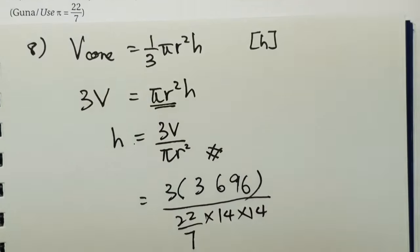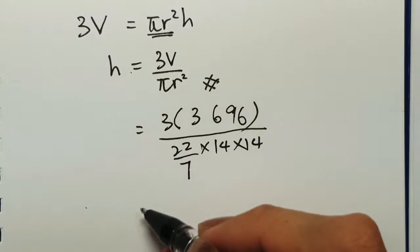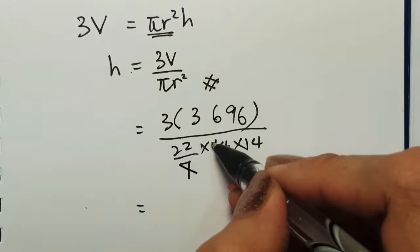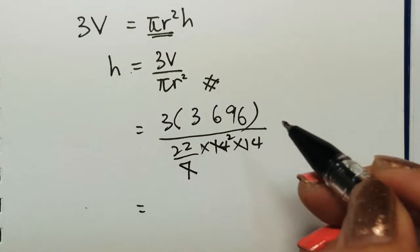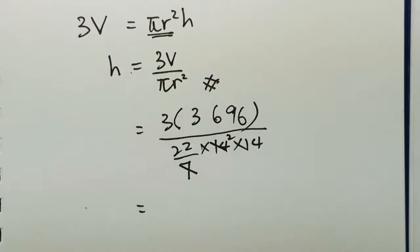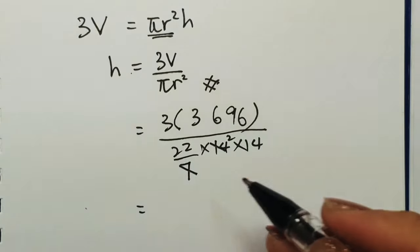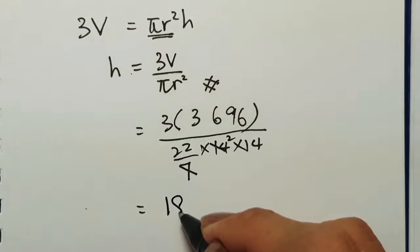Now, you can use the calculator to get the answer. So over here, we will have 2 over here. Now, let's use calculator. So when we key in, we will have 18 as our answer.